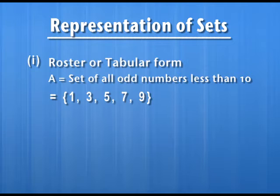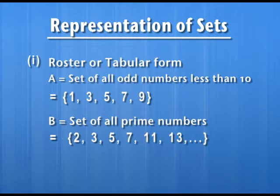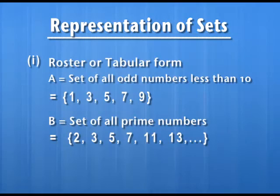Again, let me consider the set of all prime numbers. All prime numbers start from 2, then 3, 5, 7, 11, and so on — it will go up to infinity, indefinitely. So how can we write it? We cannot write all the prime numbers. So we put dots here and put them between curly brackets.